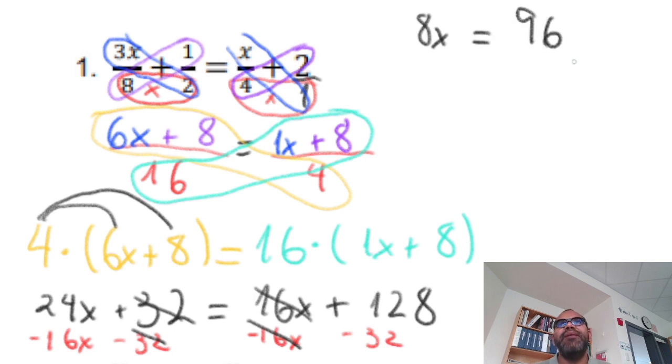Which number times 8 is 96? Mister, I don't know. Long division here. 96 divided by 8. How many times 8 goes to 9? Just 1. 9 minus 8 is 1. 16. 2 times 8 is 16. And which is x equals 12.